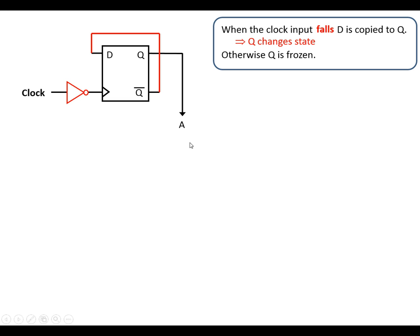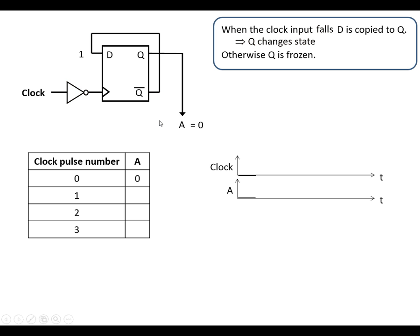And we label the output A just because when we expand this up to larger counters A is going to be the least significant bit. There's two ways we can represent what happens with this as time goes on. We've got a pulse table here which has got the clock pulse number in the first column and the states of A in the second one. And we've got the timing diagram.